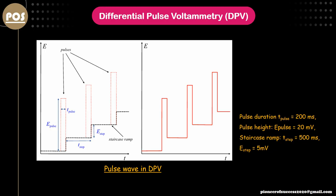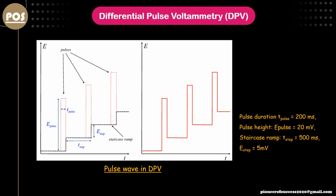Now I will show how exactly DPV signals are generated. Basically, in DPV, on the working electrode we give this kind of pulse input. How are these pulse inputs created? We have a staircase or ramp function, and on top of that we superimpose a pulse. If we combine these two, we get a waveform where the voltage increases a little bit with each pulse. In the next pulse, the voltage increases a little bit more, and this way we have pulses while slowly increasing the voltage. On the working electrode surface, we are giving pulses and incrementally increasing the voltage.